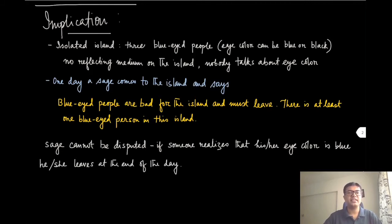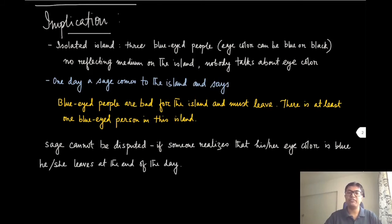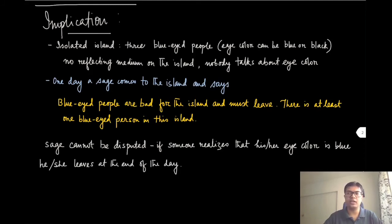Suppose one day a sage comes to this island and makes the following statement: blue-eyed people are bad for this island and must leave, and there is at least one blue-eyed person on the island. The sage is an oracle whose word cannot be disputed. If someone realizes their eye color is blue, they leave the island at the end of that day. Now, will these people leave immediately, wait a few days, or never find out their eye colors? Take a moment to think about it.